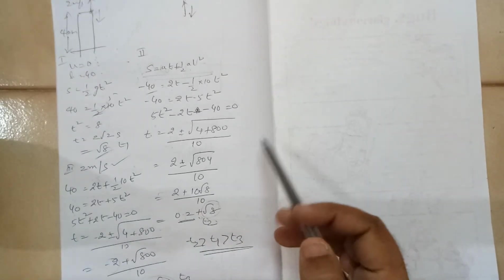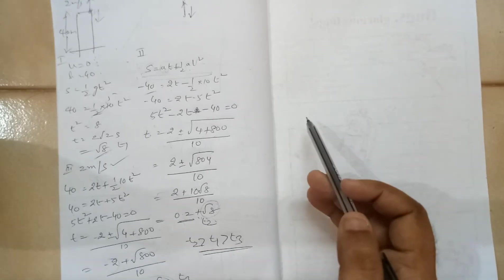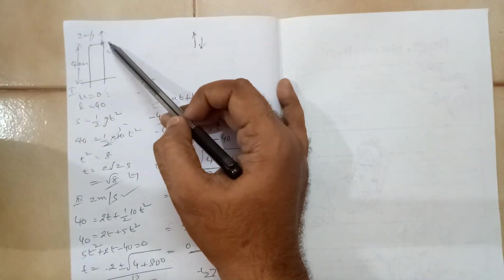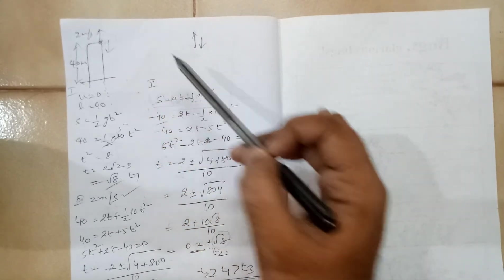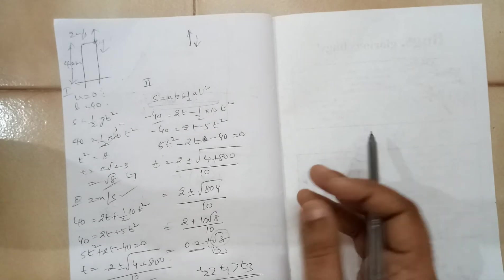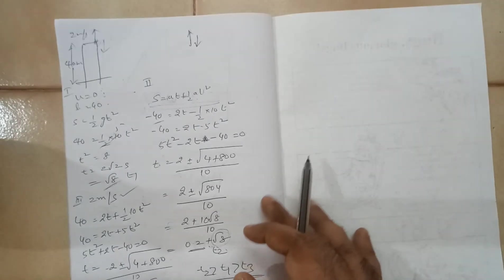Which is not acceptable. So we have to take the positive value, which is a meaningful solution. Why meaningful solution? Because if I am throwing this ball from here, it will take 1 second, 2 seconds, 0.5 seconds. It cannot be a negative value. So that is why we are doing like that.